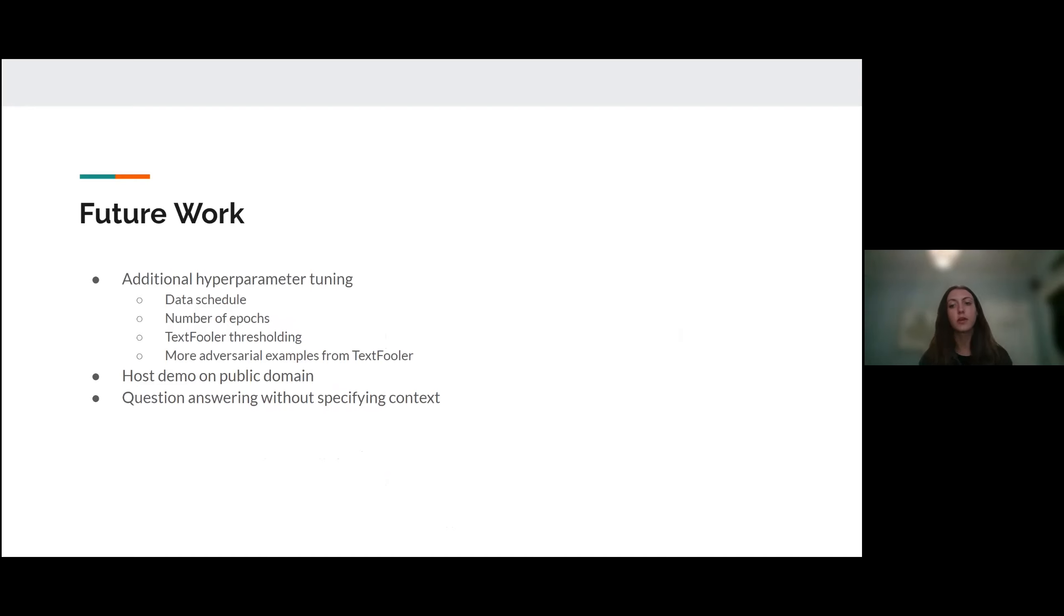Because of the time limit of our experiments, there are still some things that we wish we could have done some further investigating on. We would have hoped to do some additional hyperparameter tuning within the gradual fine tuning data schedules, as well as on TextFooler and generating more adversarial examples per question. With TextFooler, we would have liked to host our demo on a public domain, and we would have also liked to develop a question answering system that does not require a specified context.